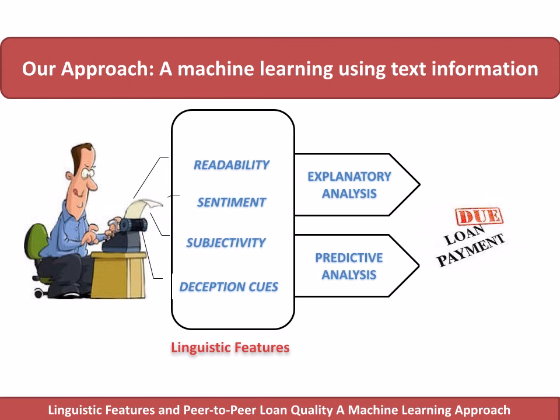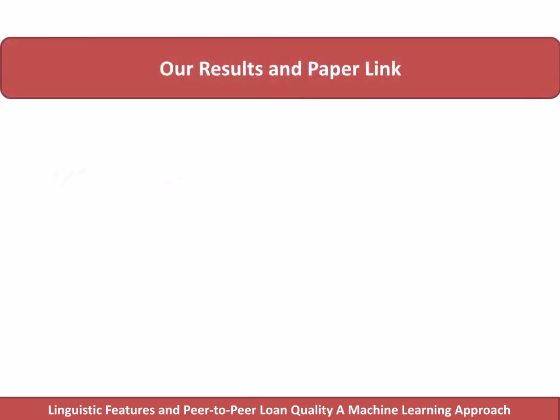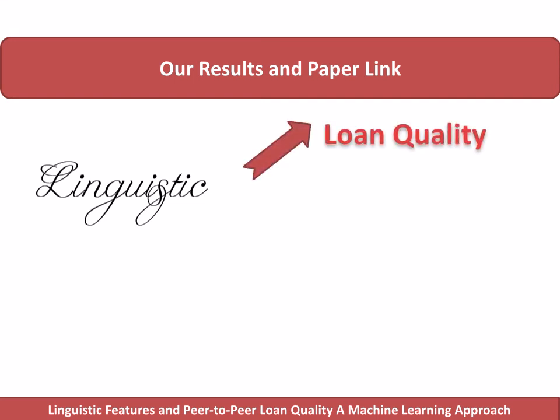In the explanatory analysis, we tested a series of hypotheses on how linguistic features are related to loan quality. And in the predictive analysis, we tested how the inclusion of linguistic features can improve prediction accuracy on loan repayment. Our results show that linguistic features provided by campaign creators indeed reflect the quality of borrowers, but haven't been fully utilized so far.